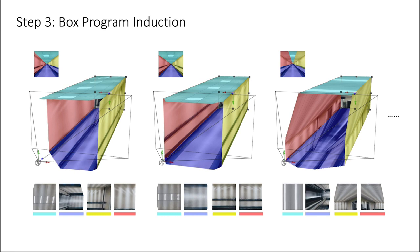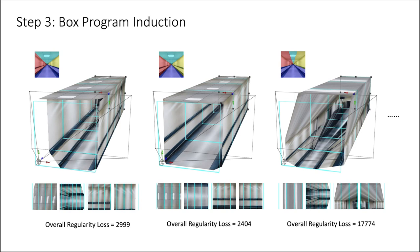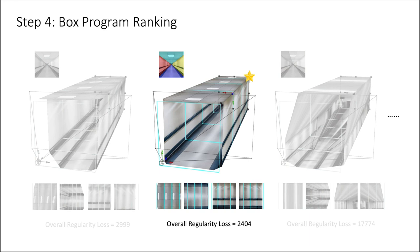For each rectified plane image, we enumerate all possible program candidates and find the one that best describes its regularity structure. Specifically, we design self-similarity metrics to compute how well every program explains pixels on the corresponding plane, and use that as our loss to rank these program candidates. By summing up the loss of 4 planes, we get the overall regularity loss of the candidate box program. Please refer to our paper for details. Finally, we use this loss to rank all candidate box programs and choose the one with the lowest loss.